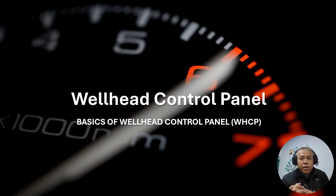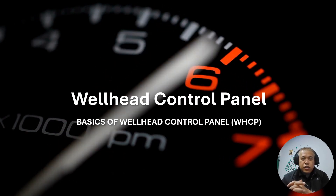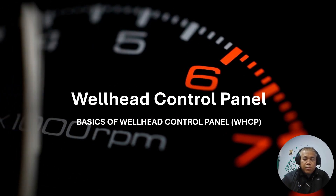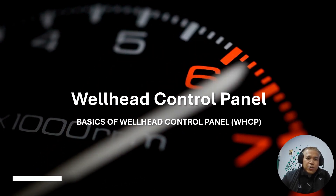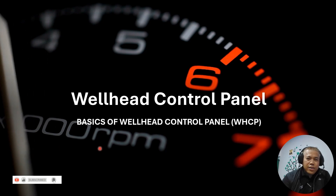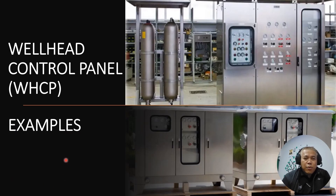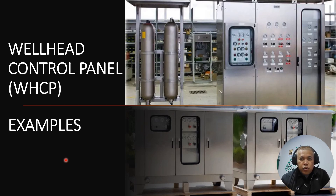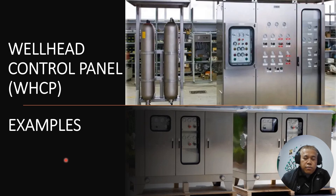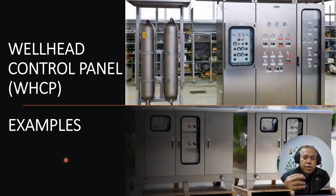This is very important and critical equipment in terms of the wellheads — this is the most important in our wellhead tower. So, wellhead control panel — let's get started. This is an example of our wellhead control panel. If you are new in the oil and gas industry, you might not know these things. But for those in E&I instrument controls, this kind of equipment is very familiar, especially offshore wellheads.